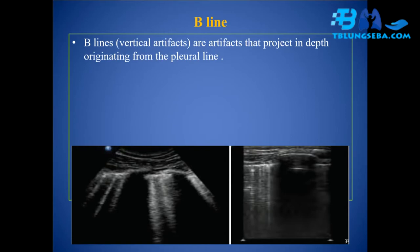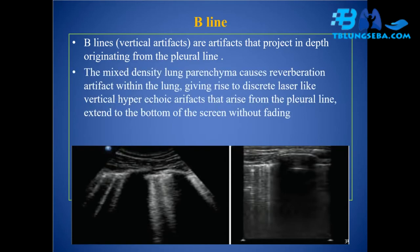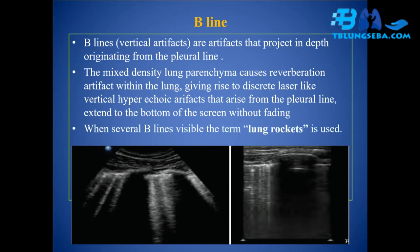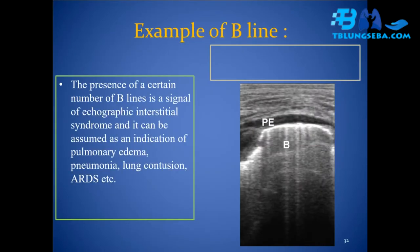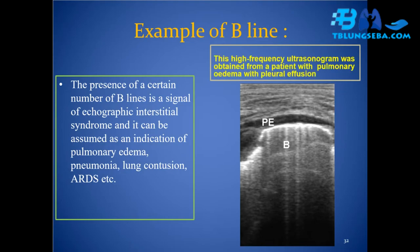B-line: B-lines are vertical artifacts that project in depth, originating from the pleural line. The mixed-density lung parenchyma causes reverberation artifact within the lung, giving rise to discrete laser-like vertical hyperechoic artifacts that arise from the pleural line and extend to the bottom of the screen without fading. When several B-lines are visible, the term 'lung rockets' is used. The presence of a certain number of B-lines signals echographic interstitial syndrome and can be assumed as an indication of pulmonary edema, pneumonia, lung contusion, or ARDS.